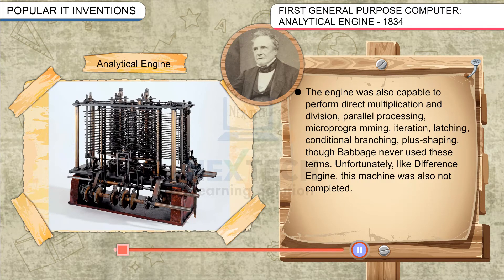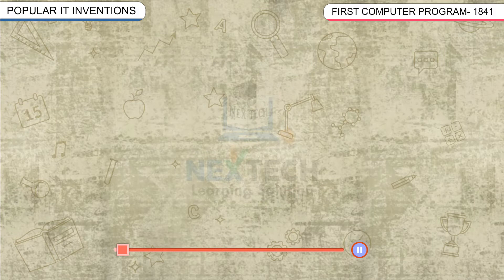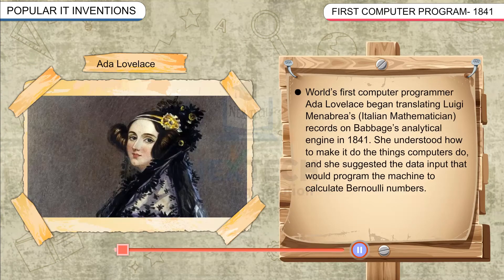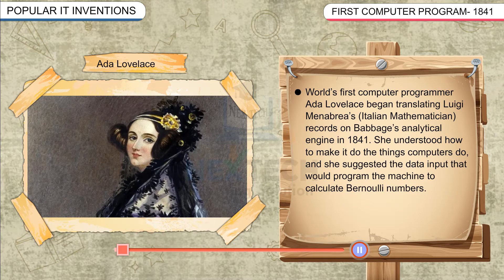First Computer Programme, 1841: Ada Lovelace, the world's first computer programmer, began translating Luigi Menabrea's Italian mathematician records on Babbage's Analytical Engine in 1841. She understood how to make it do the things computers do, and she suggested the data input that would program the machine to calculate Bernoulli's numbers.